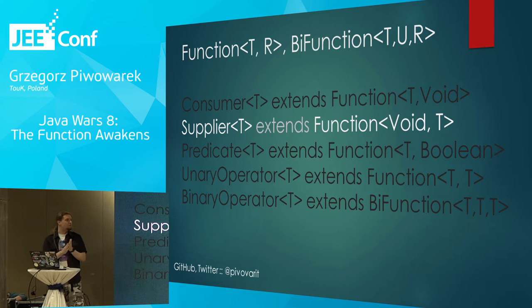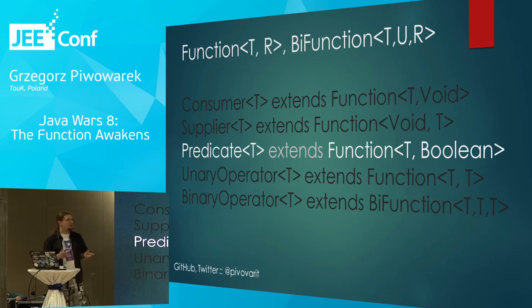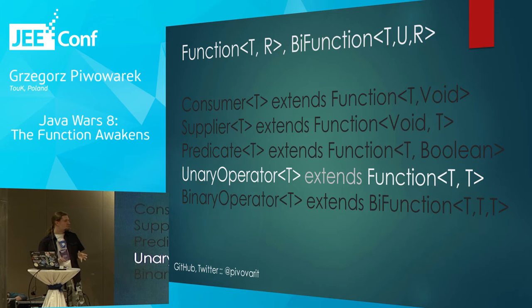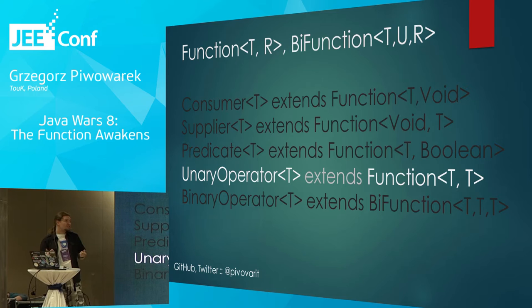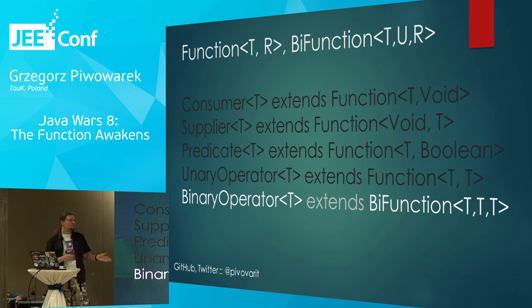Another very popular keyword is Predicate — a function that accepts any argument and always returns a boolean, meaning those functions are used for filtering, checking if some objects conform to some predicate. Another popular keyword is UnaryOperator — a function that accepts an argument of one type and returns an object of the same type, useful for generating sequences. And one very important one is BinaryOperator — a function that takes two arguments of the same type and returns another one also of the same type, used for merging two values into one or picking one out of two.